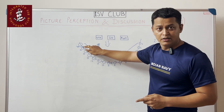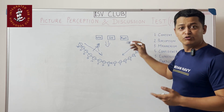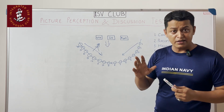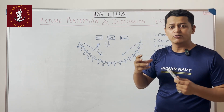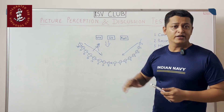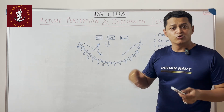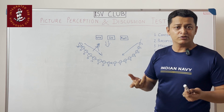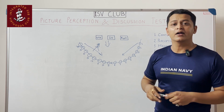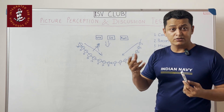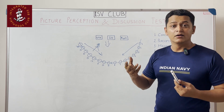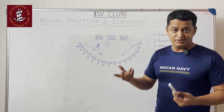One myth to break: the group automatically jumps into the discussion part. For the total exercise, you will get close to 25 to 30 minutes. If 16 candidates are sitting, 16 minutes will go in individual narrations, leaving 10 to 14 minutes for discussion. You will barely get 5 to 6 chances to give your opinion and viewpoints to help form a common consensus.